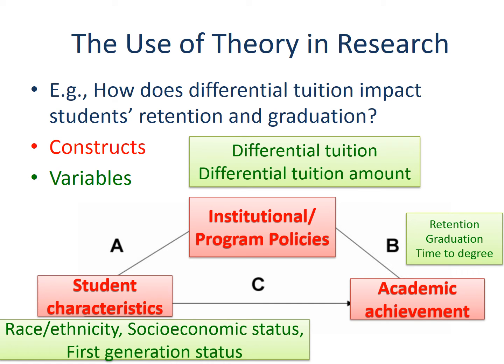Based on our constructs, we identify variables for each concept. Students' characteristics can include race, ethnicity, socioeconomic status, and first-generation status of individual students. Institutional or program-level tuition policy can be operationalized as (a) whether the program charges differential tuition and (b) how much the differential amount is. Finally, academic achievement in this study can be measured by retention, graduation, and time to degree.